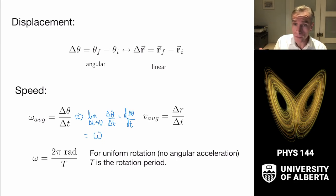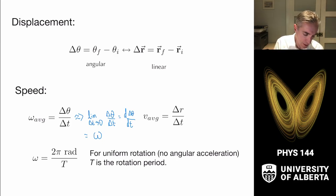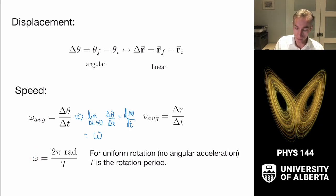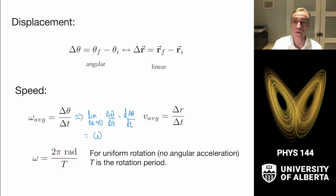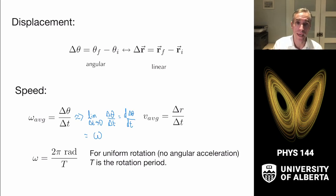We'll often engage in uniform rotation, and in that case the angular speed can be related to the period — how long it takes to go around. That is just two pi radians divided by the time it takes to execute one complete revolution, giving us a quick way to interpret the angular speed or angular velocity of the system.